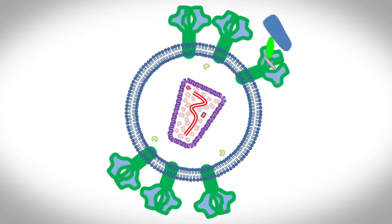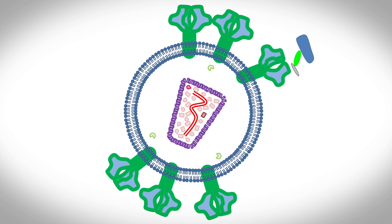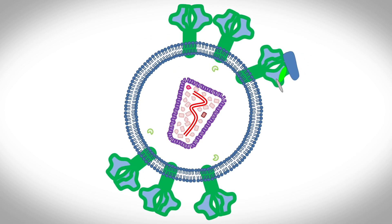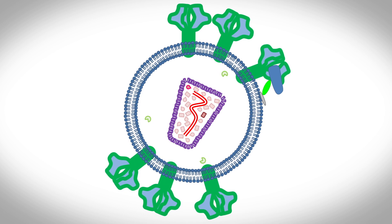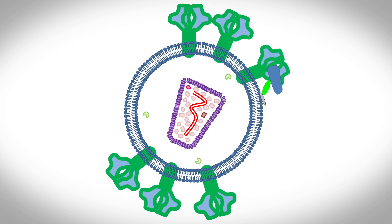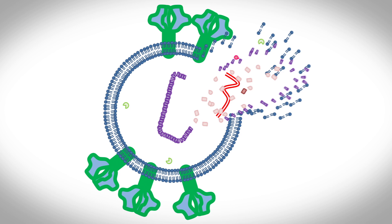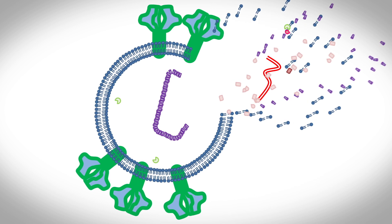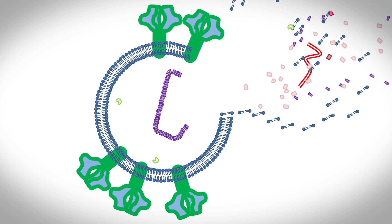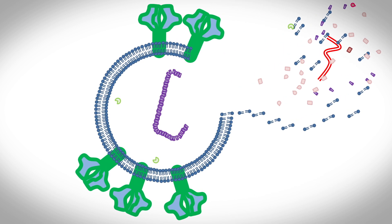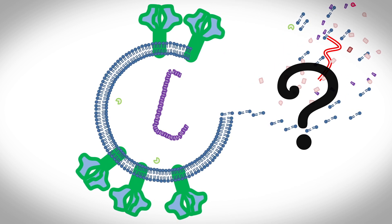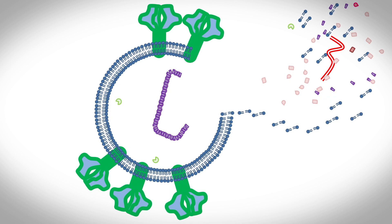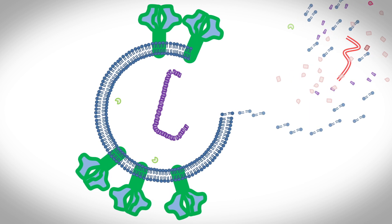Essentially what you'll see in this animation is that the molecule attaches itself to the AIDS virus, making the virus think it's attached to a cell. The virus then fires its protein spike and spews out its contents. But it's not actually attached to a cell, so the contents float off into oblivion and the virus is rendered inert.